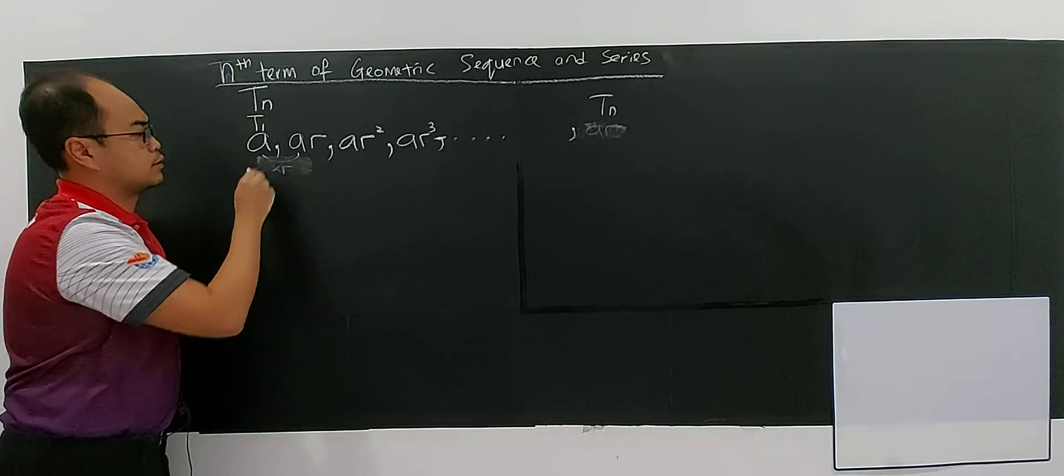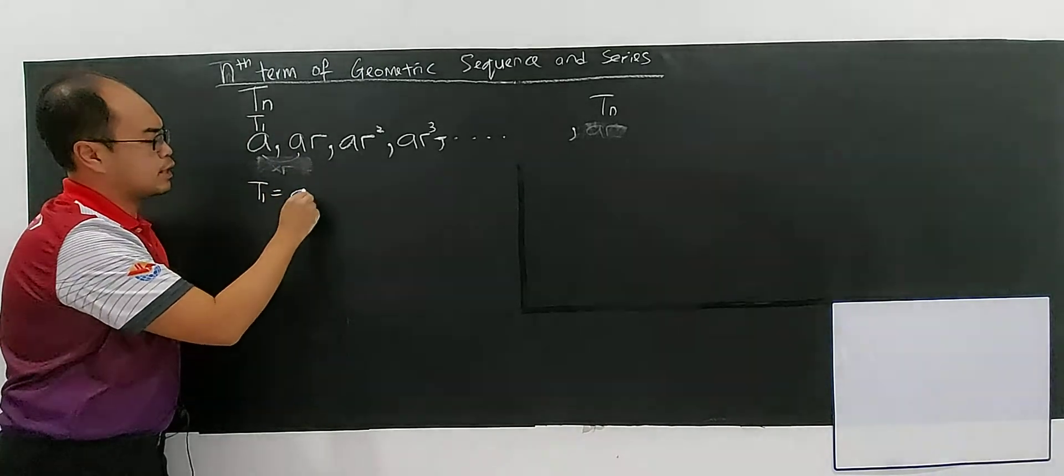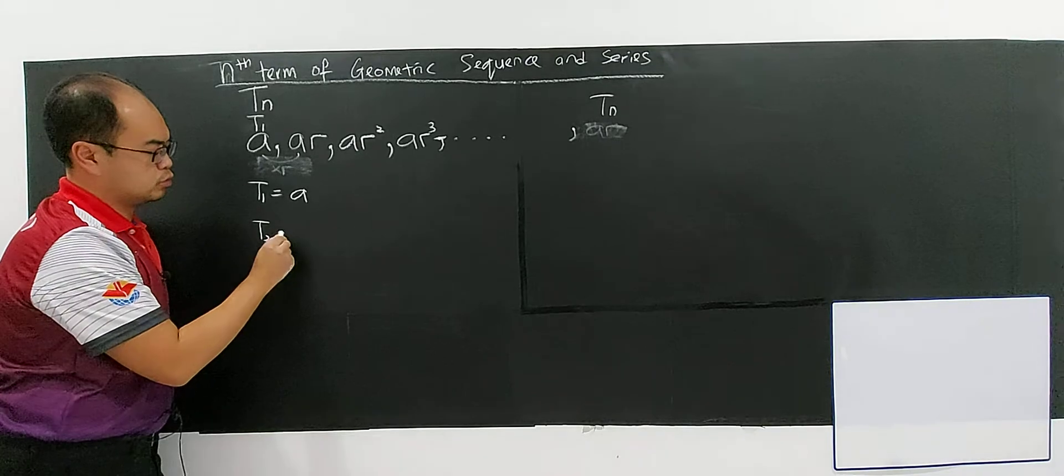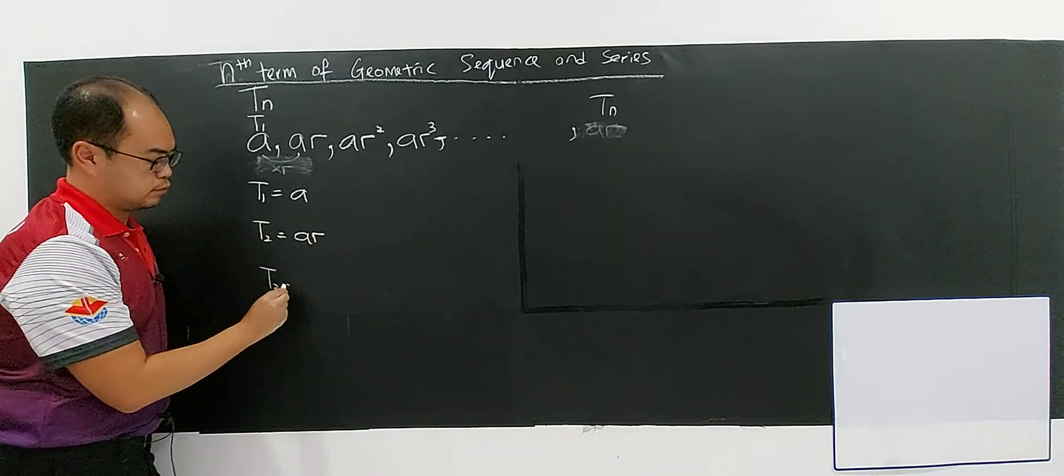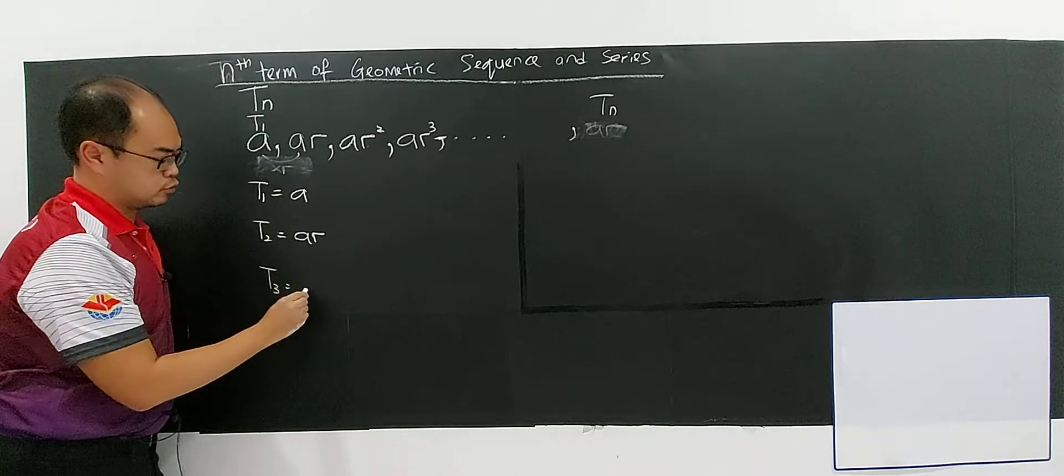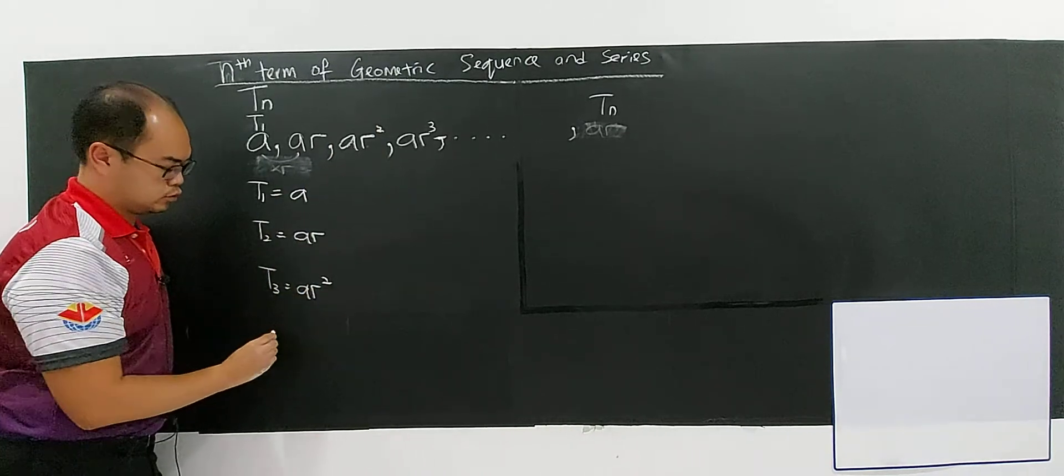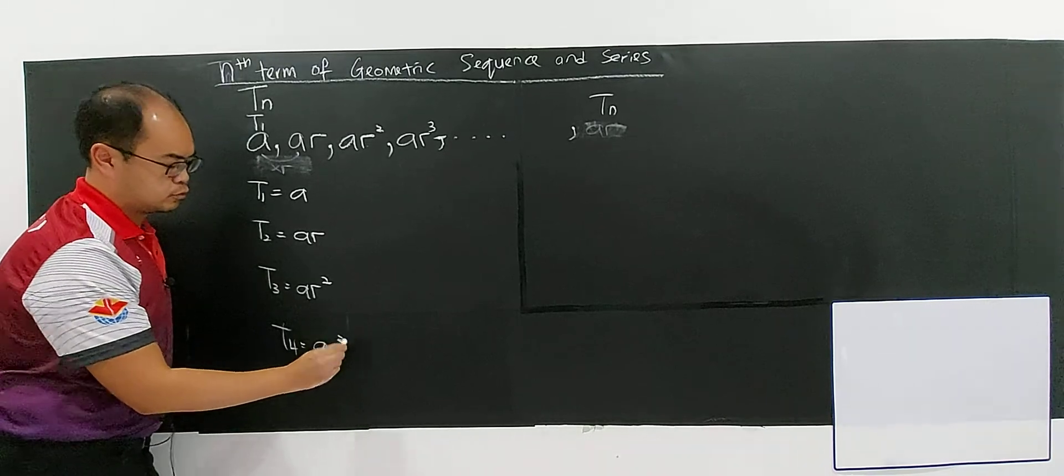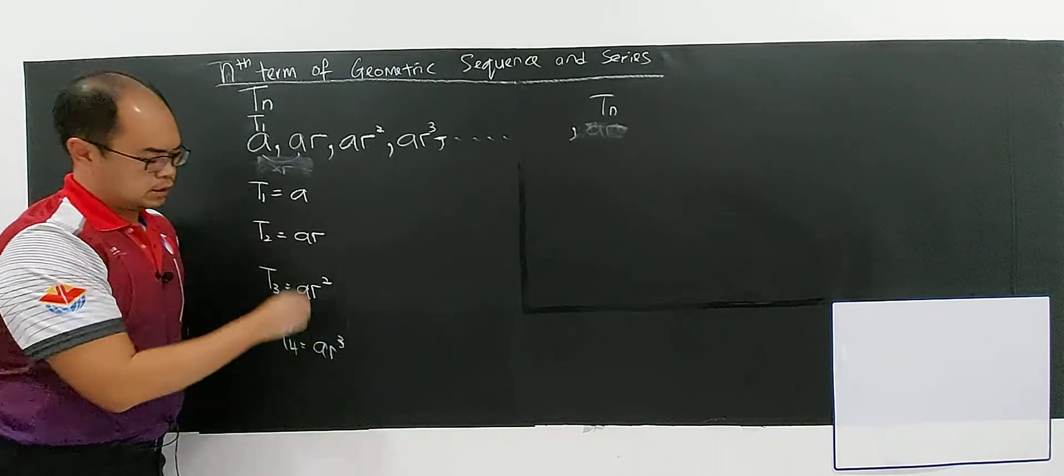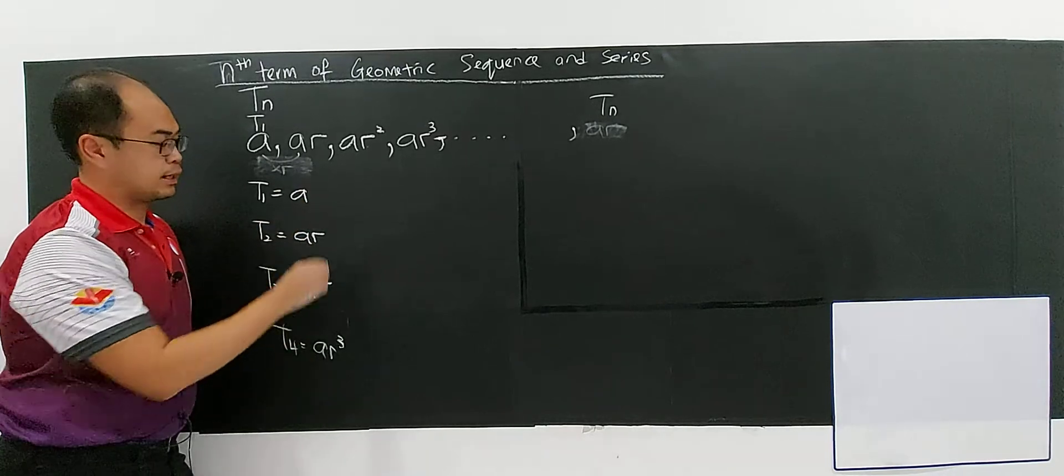This is your T1. Your T1 is A. And your T2 is AR. And your T3 is AR to the power of 2. And T4 is AR power of 3. What can you observe about the pattern here?